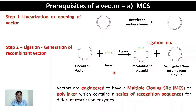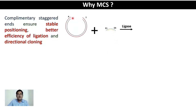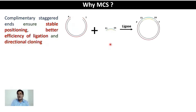The MCS helps in accommodating any type of insert with any type of restriction ends. It also helps ensure directional cloning. For example, if the objective is to express the insert, your vector has a promoter at one end and a termination sequence at the other. You can only insert the DNA in the correct place to ensure expression, and the orientation of the insert ligating to the vector is critical.